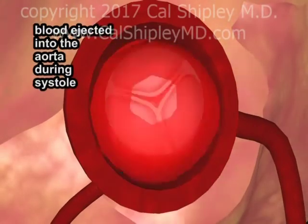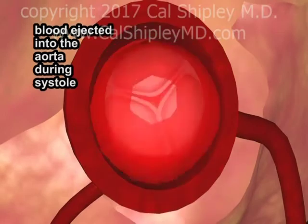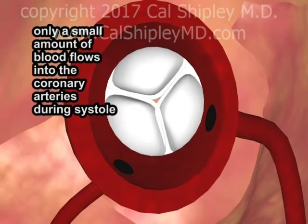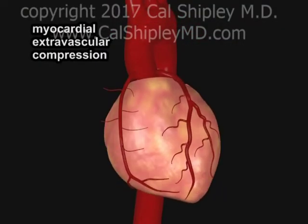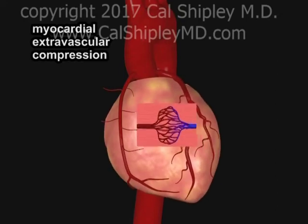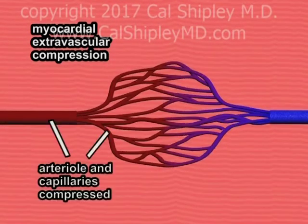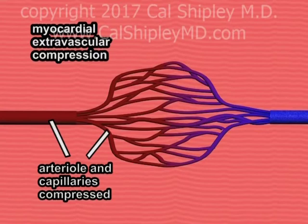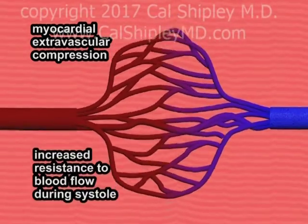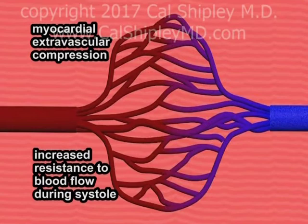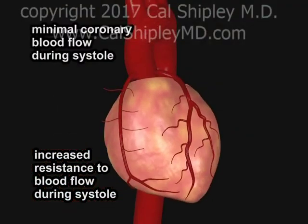During systole, blood is ejected from the left ventricle, through the aortic valve, and into the aorta. Though it may seem somewhat paradoxical, only a small amount of blood flows into the coronary arteries during systole. The reason for this limited volume of coronary artery blood flow during systole is a phenomenon known as myocardial extravascular compression. Contraction of the myocardium during systole compresses the dense network of arterioles and capillaries interwoven throughout the muscle, causing a marked increase in resistance to blood flow through the coronary system, and hence a small volume of flow into the coronary arteries during systole.